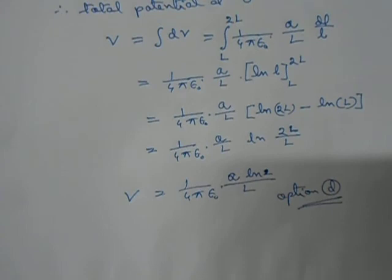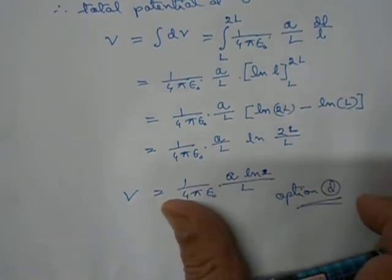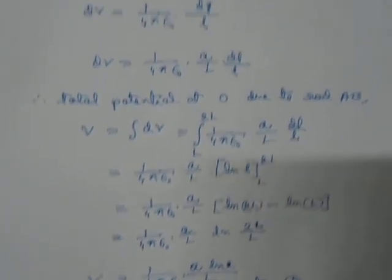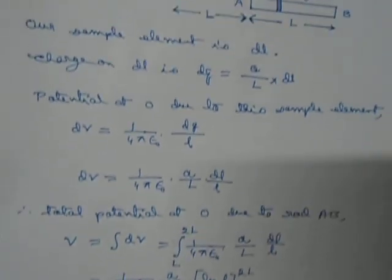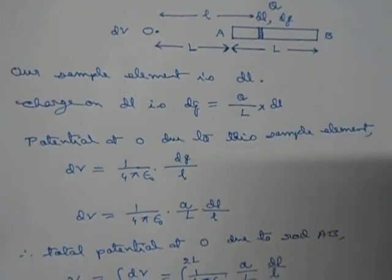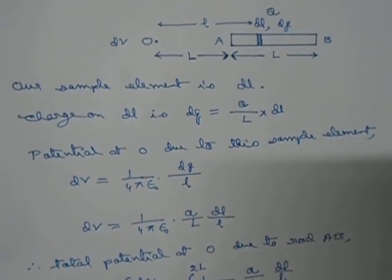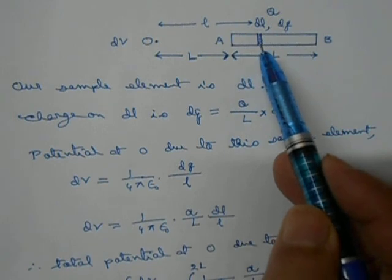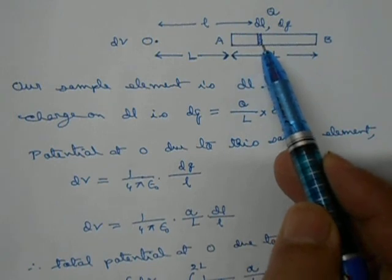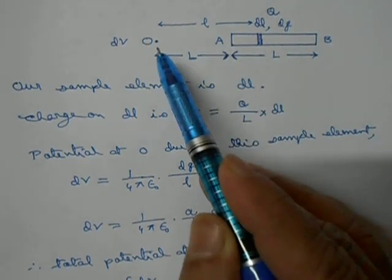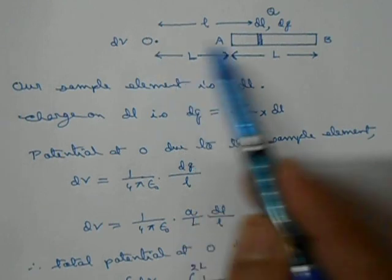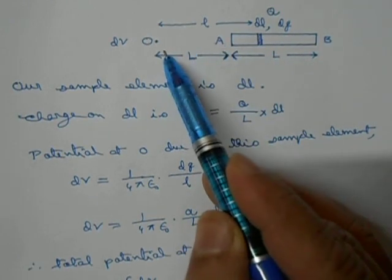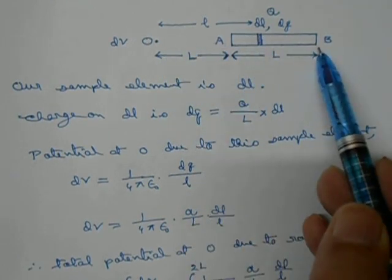In questions like this, our approach is: first take a small sample element, find the potential at the required point due to that sample element, then integrate it with proper limits.